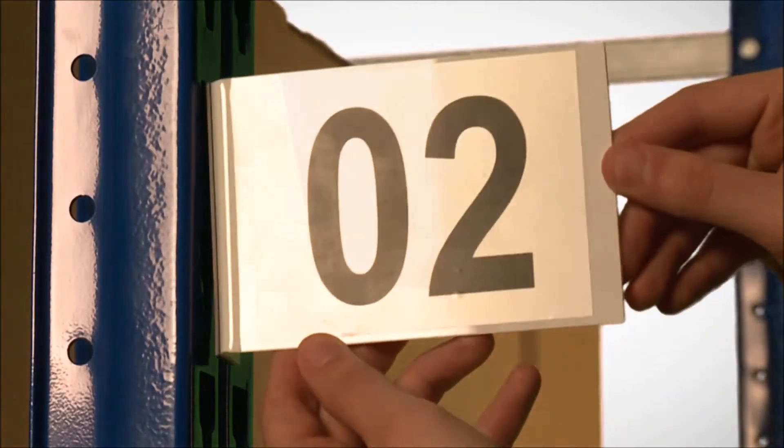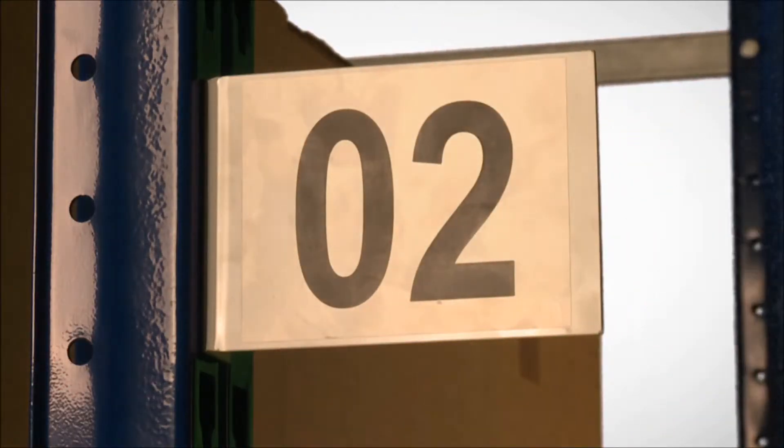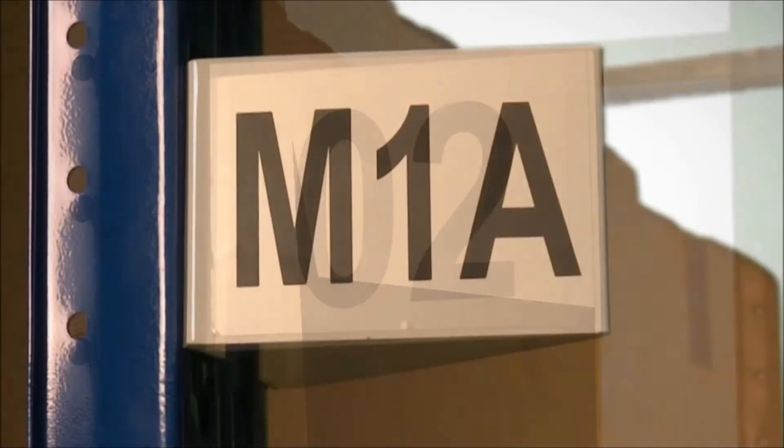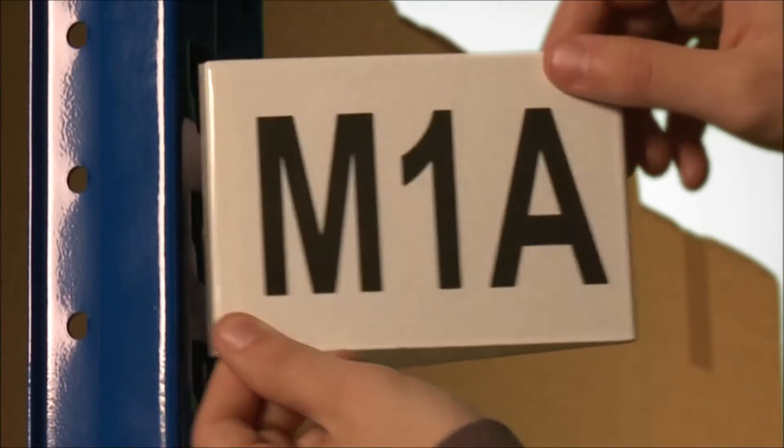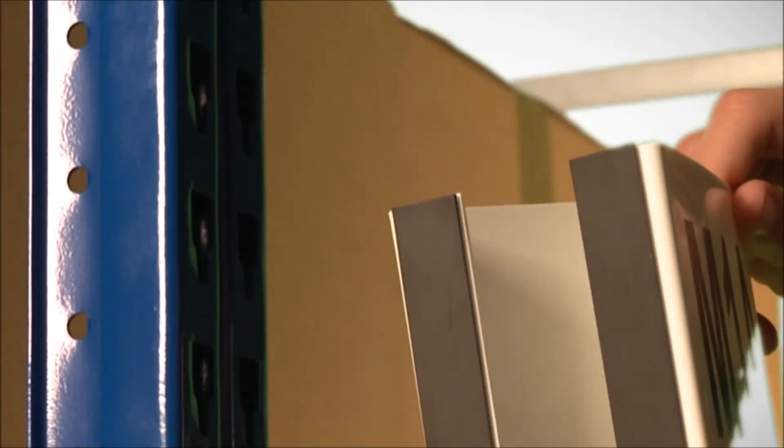There are angled aisle flags that highlight and identify individual bays. These include an L-shaped marker and a triangular marker, both with either a self-adhesive or magnetic fixing.